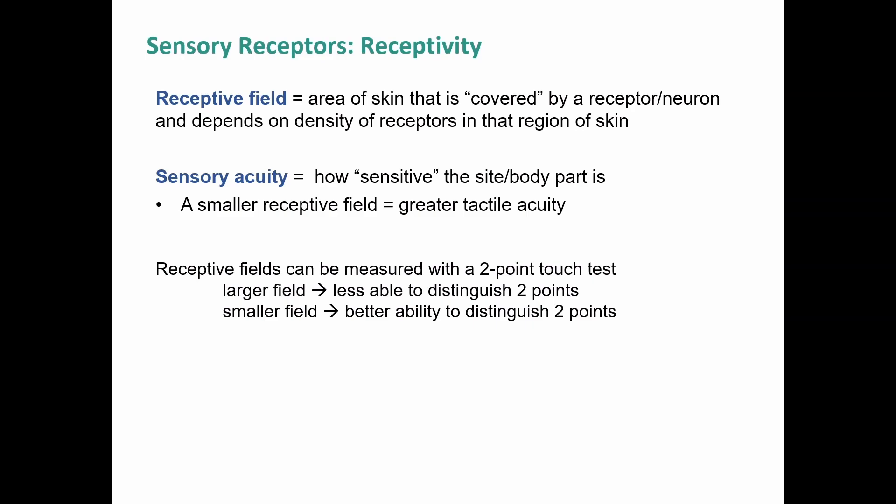Different body parts have different sensitivities, which comes down to the receptive field — the area of skin covered by a receptor or neuron, depending on receptor density. When density is low, receptors are spread over a larger area and the receptive field is large. As density increases, receptive fields become smaller for each individual receptor. Think of it like a tree canopy: sparse trees spread wide, but dense trees each have a smaller canopy because they can't grow beneath each other.